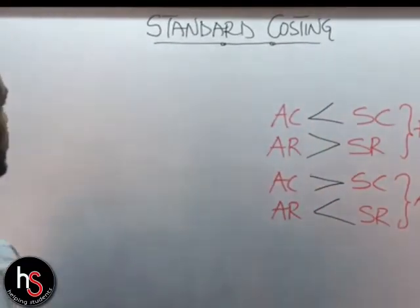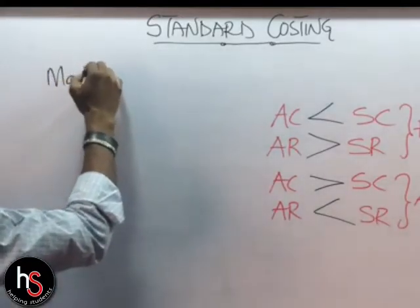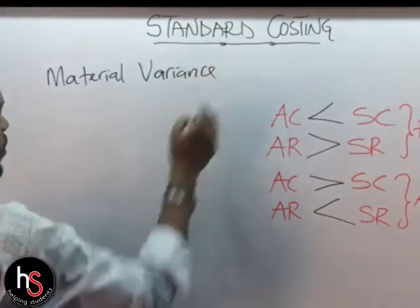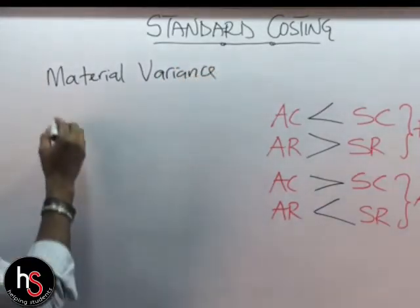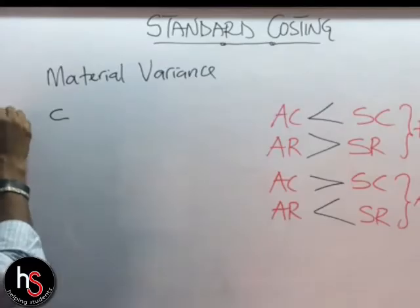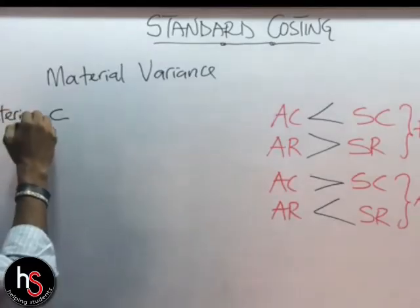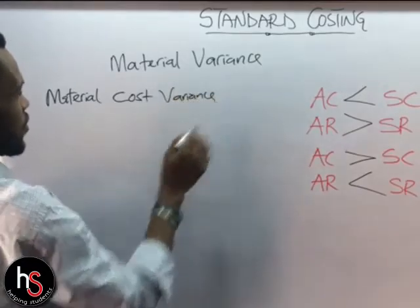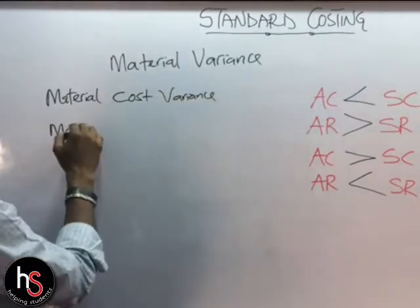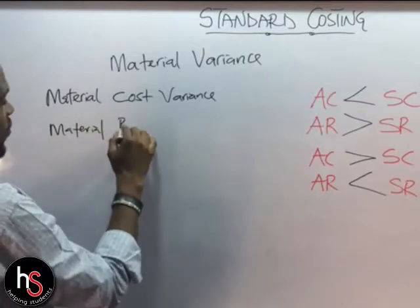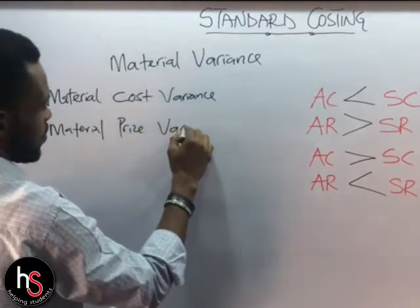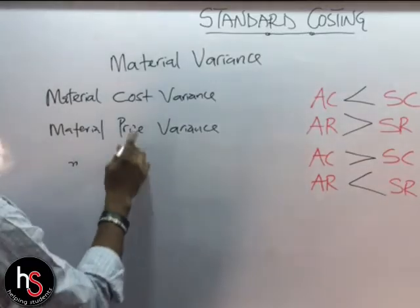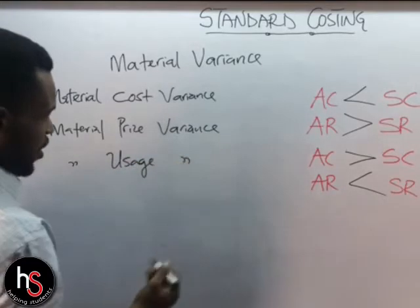Coming to the material variances, under the material variance we have three types: the material cost variance, the material price variance, and the material usage variance.